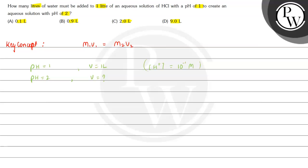And when pH is equal to 2, the H+ concentration will be equal to 10 to the power minus 2 molar.